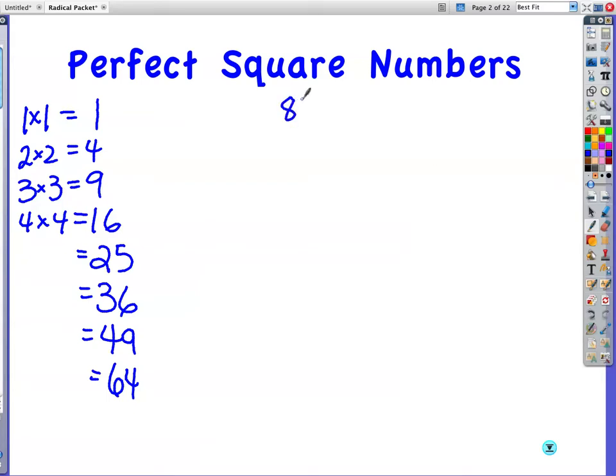9 times 9 is 81. 10 times 10 is 100. Let's keep going. How much do you know off the top of your head? 11 times 11 is 121, and then 12 times 12 is 144. Those are numbers that you should recognize that are perfect squares.